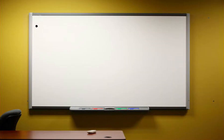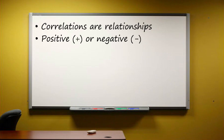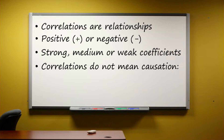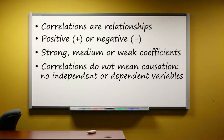Remember: correlations are relationships between factors. They may be positive or negative. They can be strong, medium, or weak. Although they may be suggestive, correlations don't establish causation. Correlations have co-variables and not independent and dependent variables. And here you have to explain why and illustrate your answer.